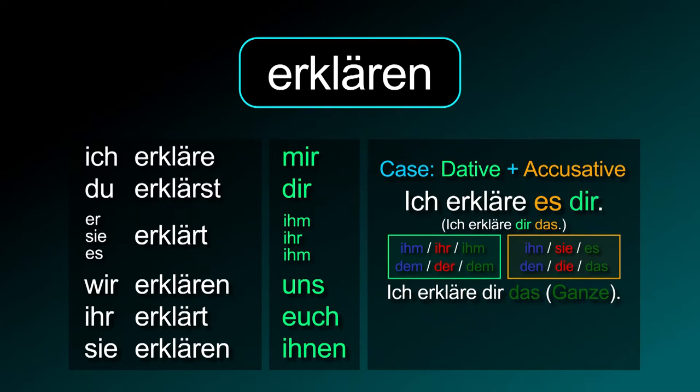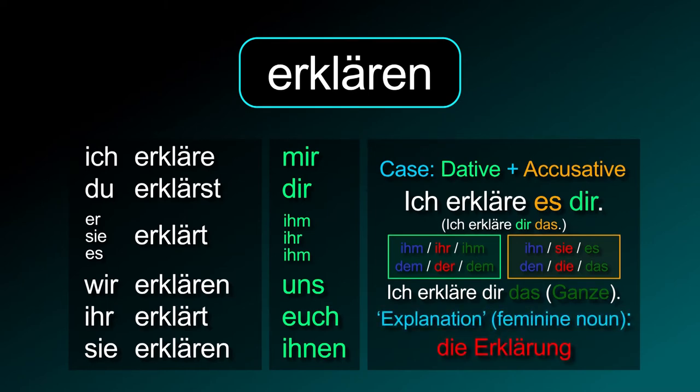Use the correct article or personal pronoun depending on the person's and the noun's gender. To make it easier, you can also use the neuter gender as long as you don't include the noun in your sentence — then it is normally referred to as 'das Ganze,' which means 'the whole thing.' Its noun is feminine: die Erklärung.